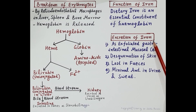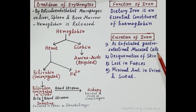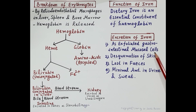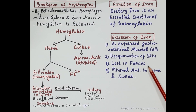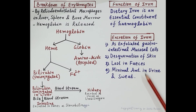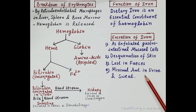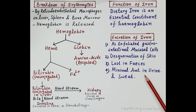Iron is stored in the gastrointestinal mucosal cells as ferritin and hemosiderin. Exfoliation of these gastrointestinal mucosal cells excretes the iron. Exfoliation of skin — that is, removal of dead skin cells — also excretes iron. A little iron is excreted in the feces, and a minimal amount is excreted in the urine and sweat.